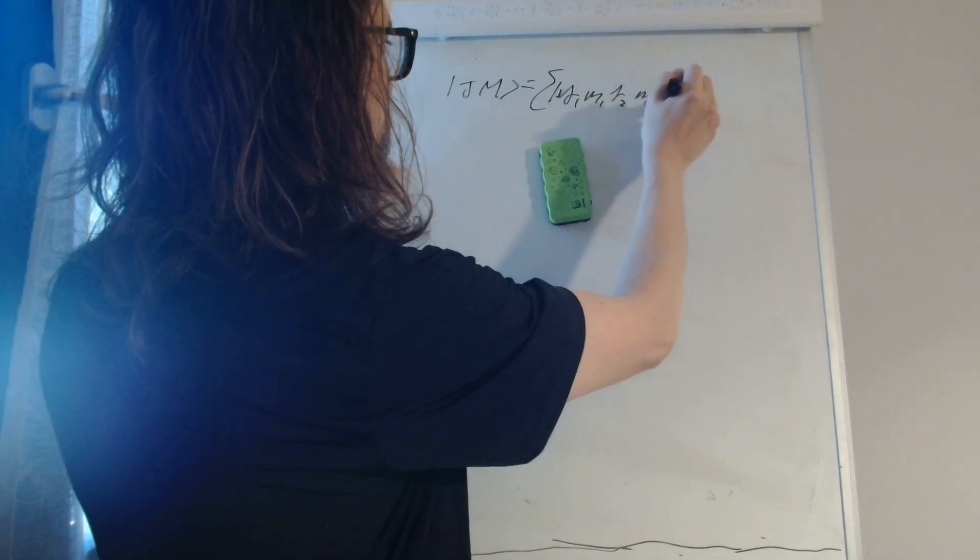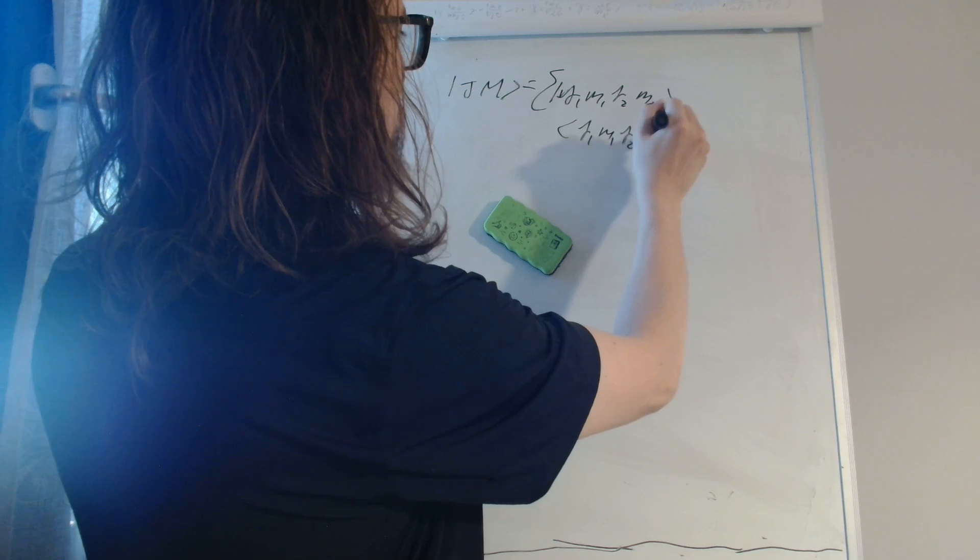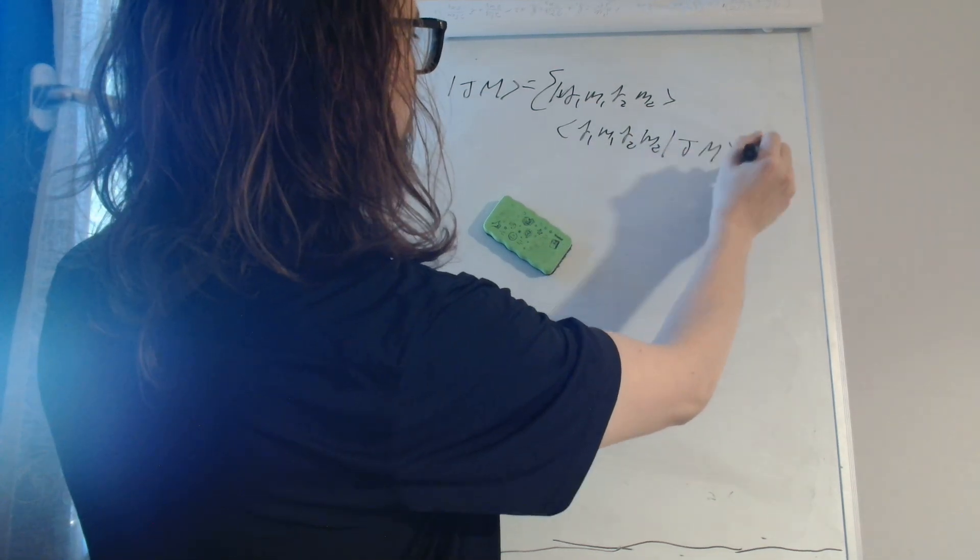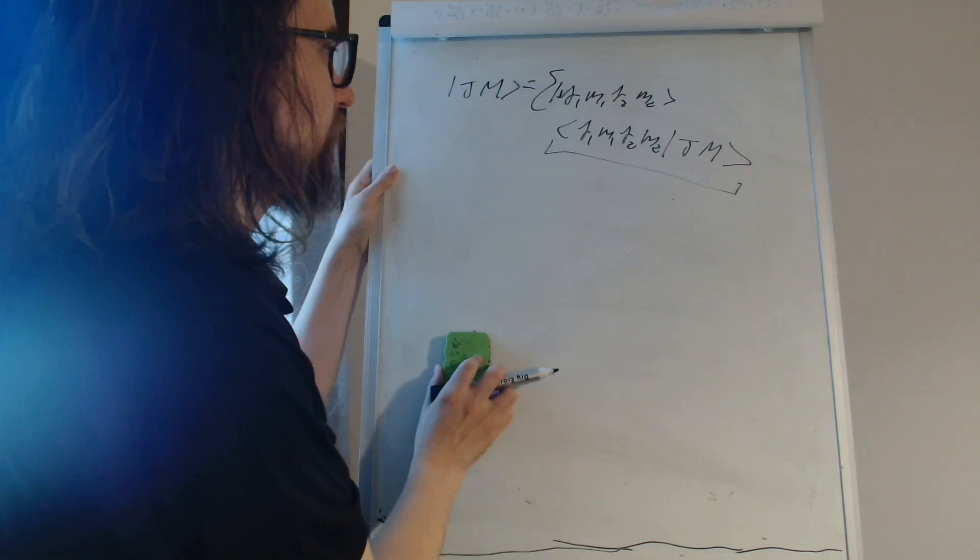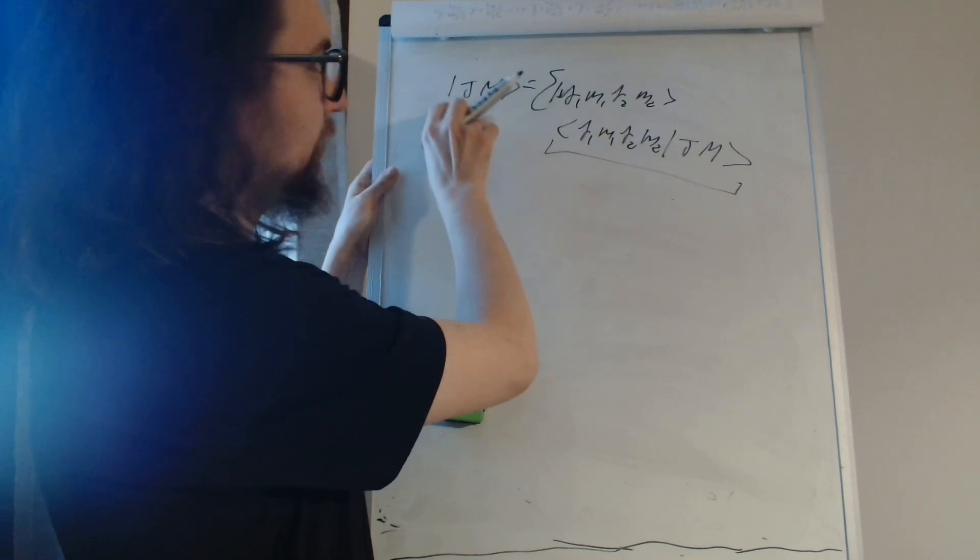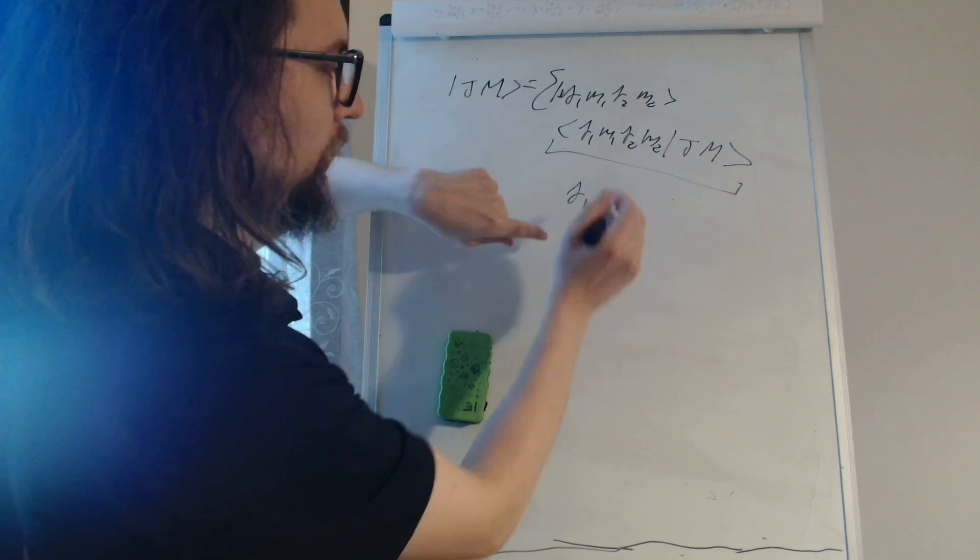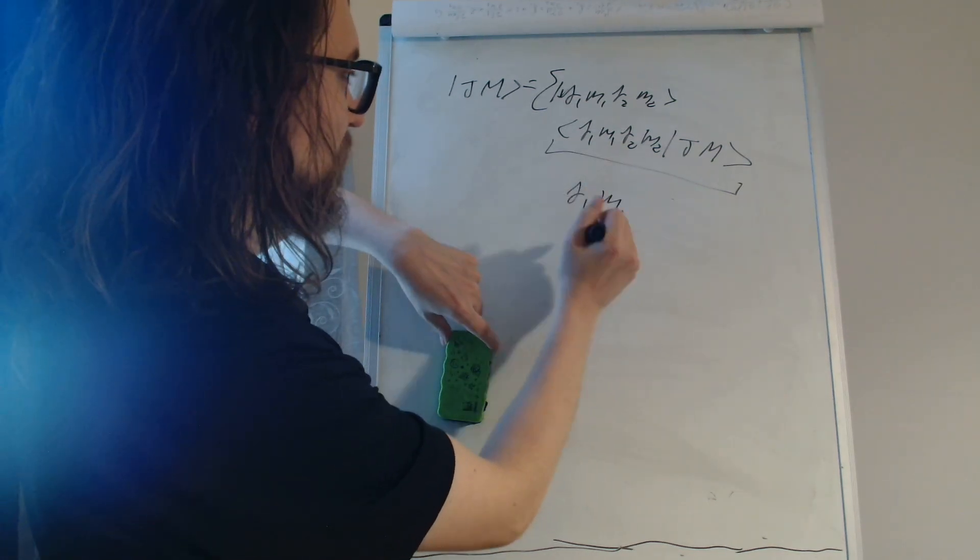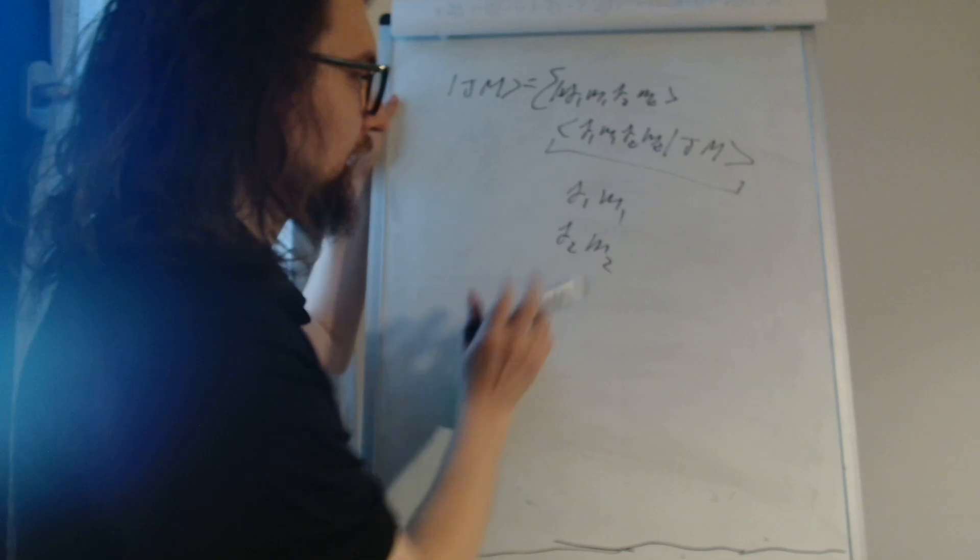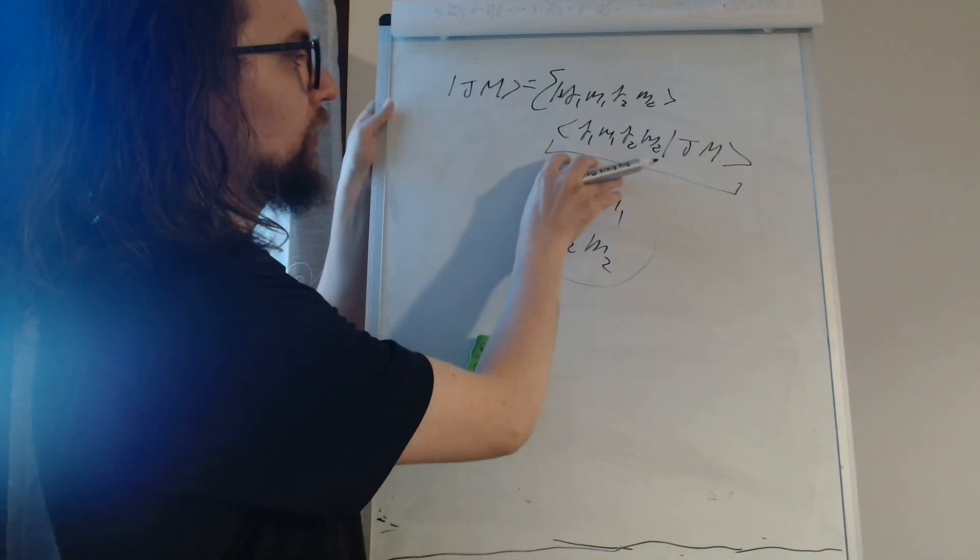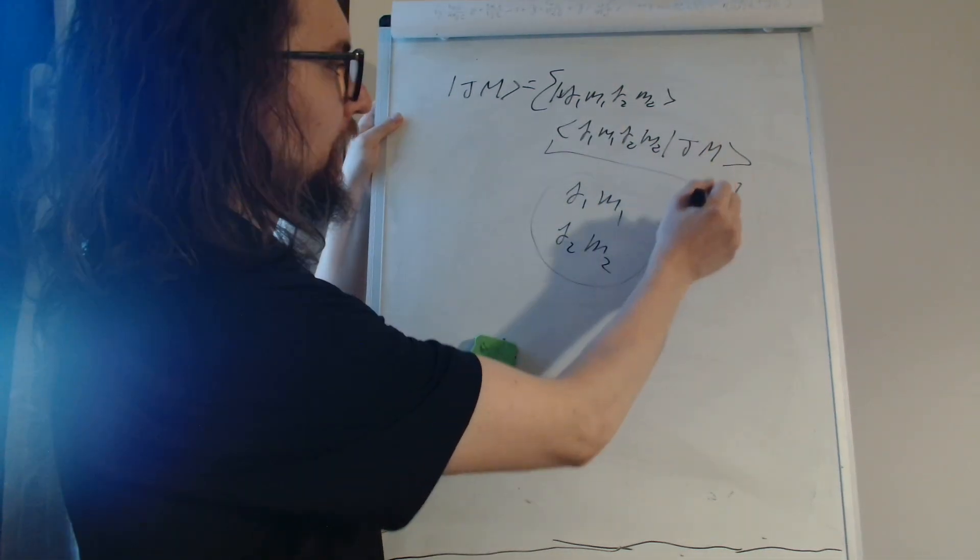Times J1, M1, J2, M2, J, M. So these coefficients represent the probability of decoupling this system into two systems with these values for the angular momentum. The probability is given by the modulus squared of this, and these products are called the Clebsch-Gordan coefficients.